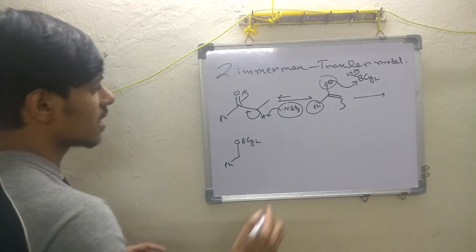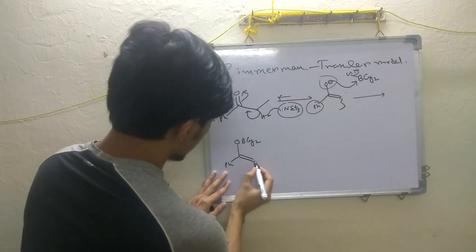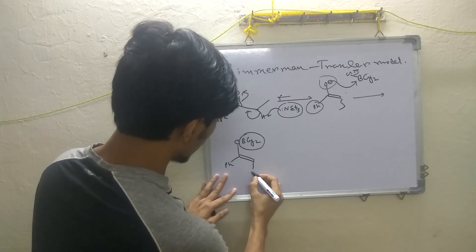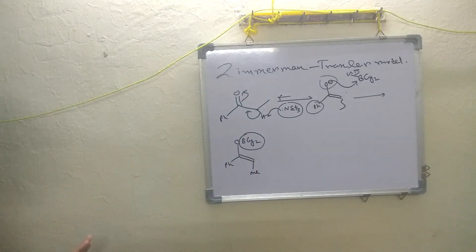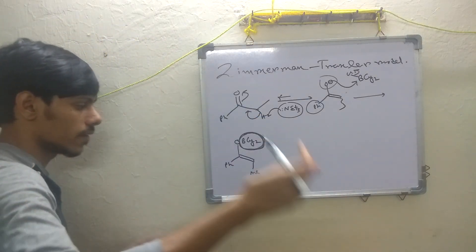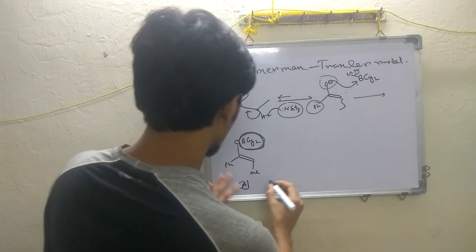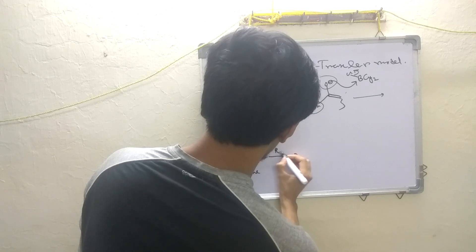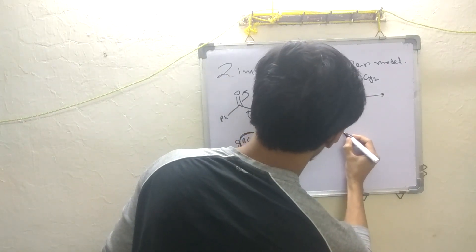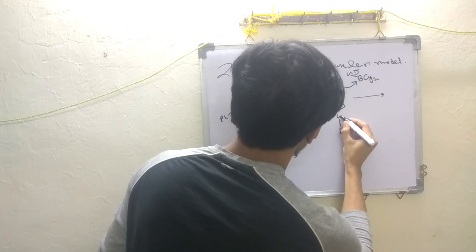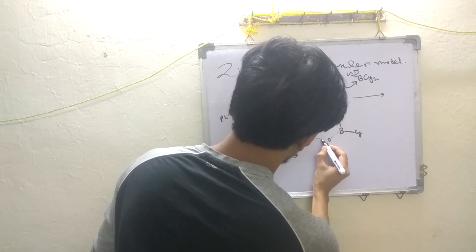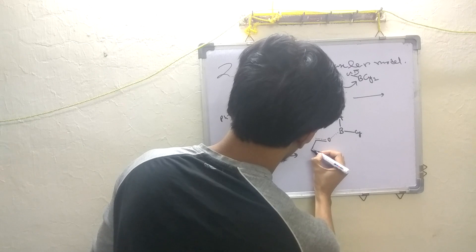After formation of this enolate, this is our compound A. Now we react it with our aldehyde to find product B. According to the Zimmermann-Traxler model, in place of lithium we now have boron, and two cyclohexyl groups are attached. This boron coordinates with the oxygen of the enolate, one bond is breaking, and a new bond is forming.